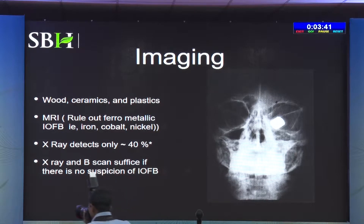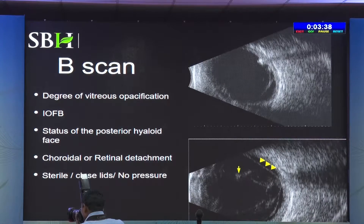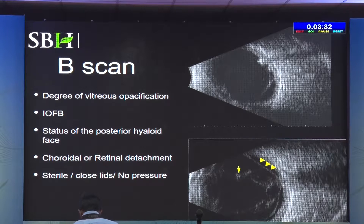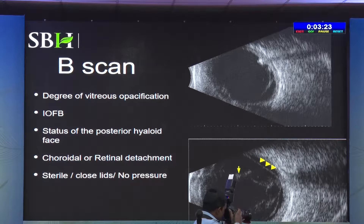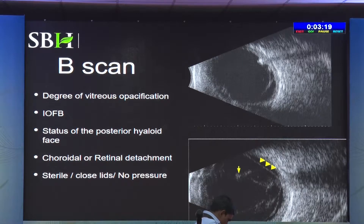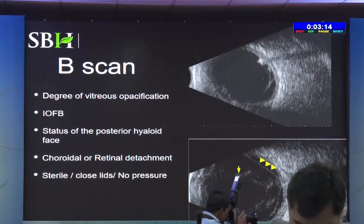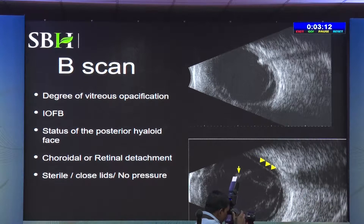X-ray detects only 40% of foreign bodies. B-scan should be done very gently through closed lids. It can reveal vitreous pacification, which may represent either vitreous hemorrhage or endophthalmitis. Serial B-scans can be prognosticative — done daily to see whether vitreous infiltration is worsening or improving. B-scan also provides information about foreign body location, retinal status, vitreous posterior hyaloid status, and whether the posterior hyaloid is detached, which makes surgery easier.